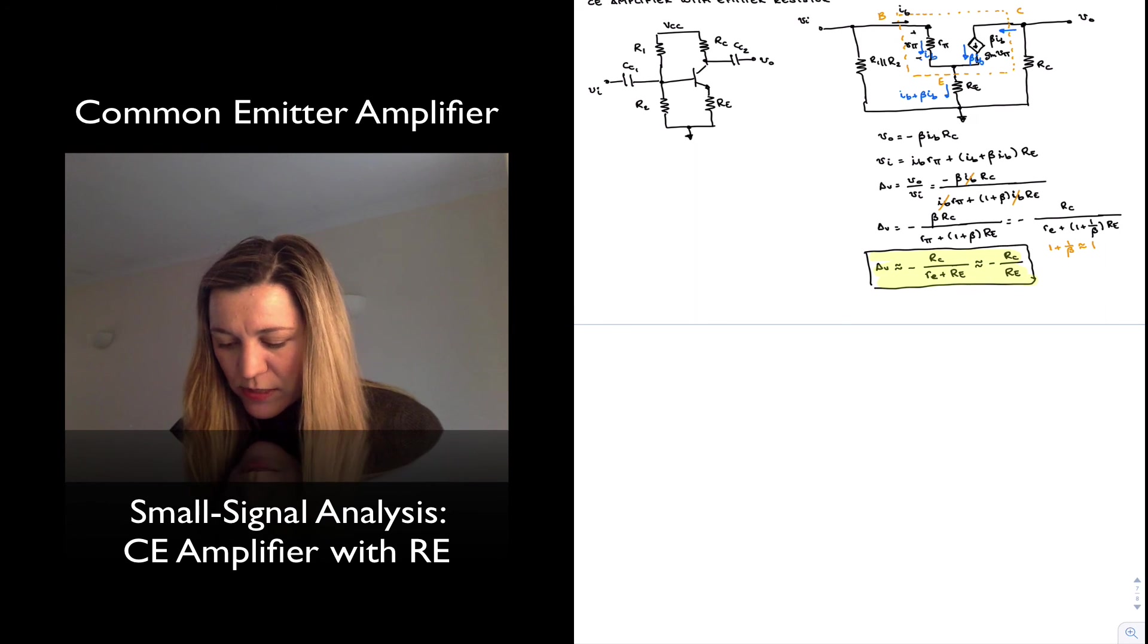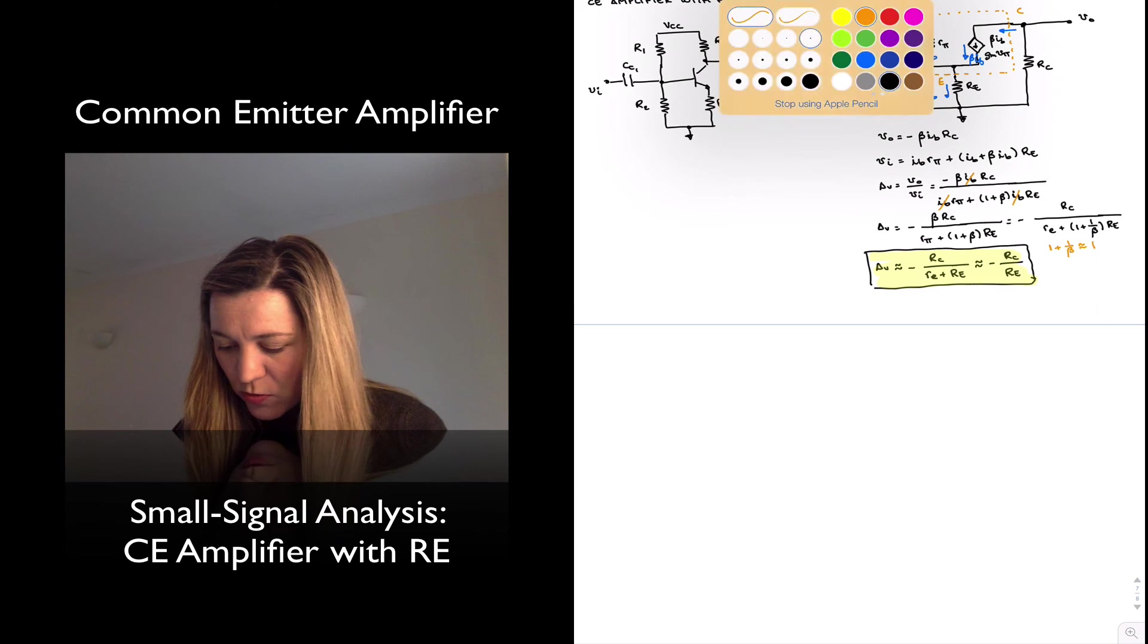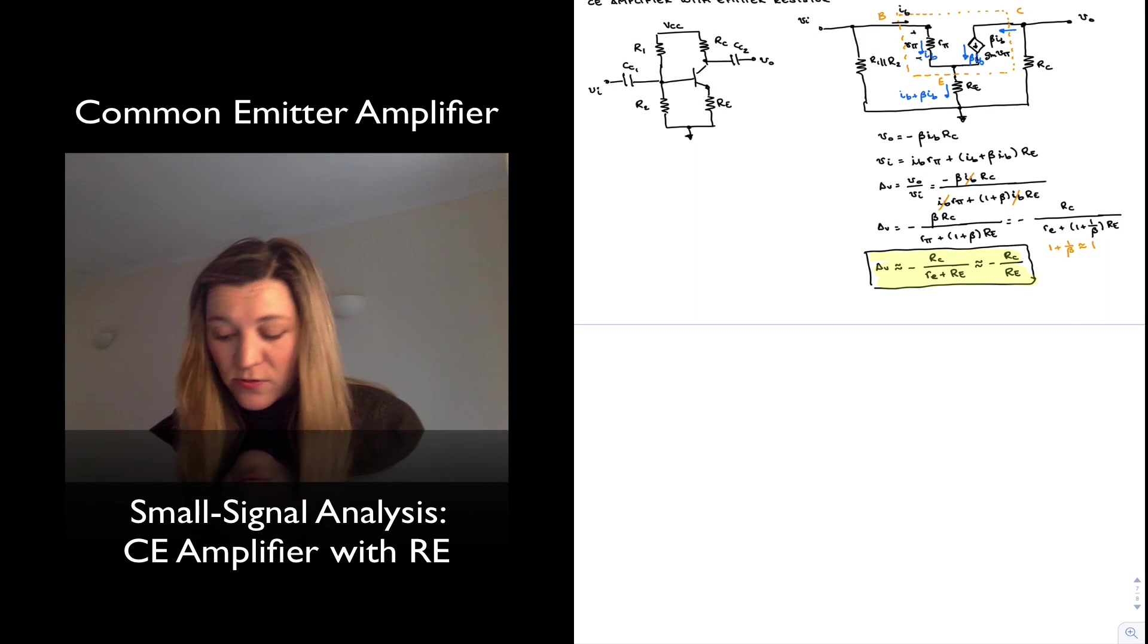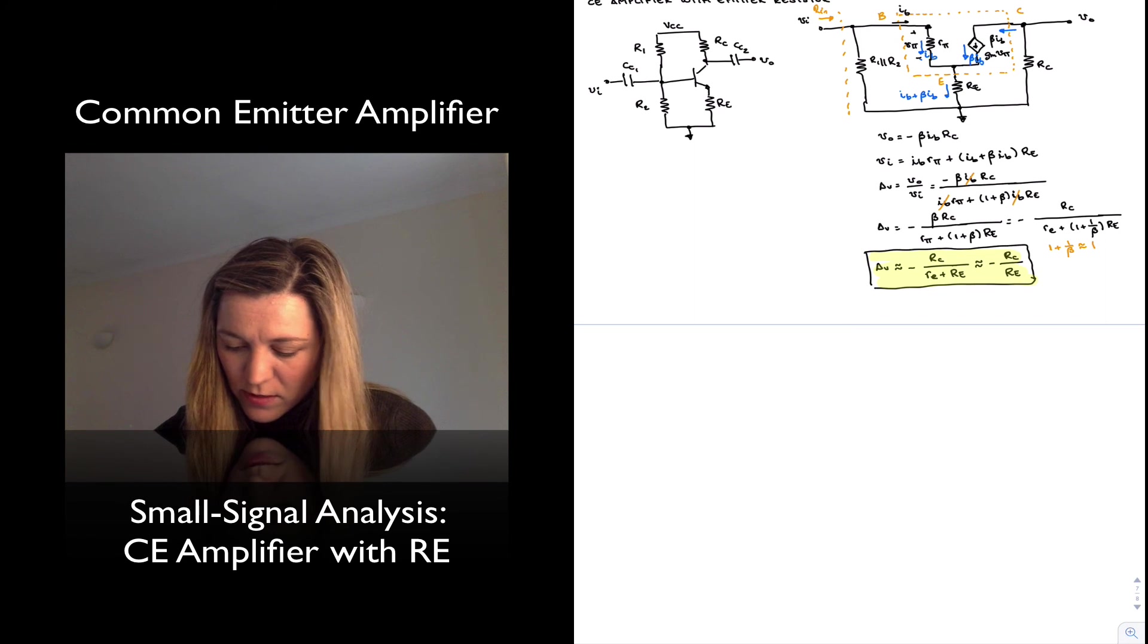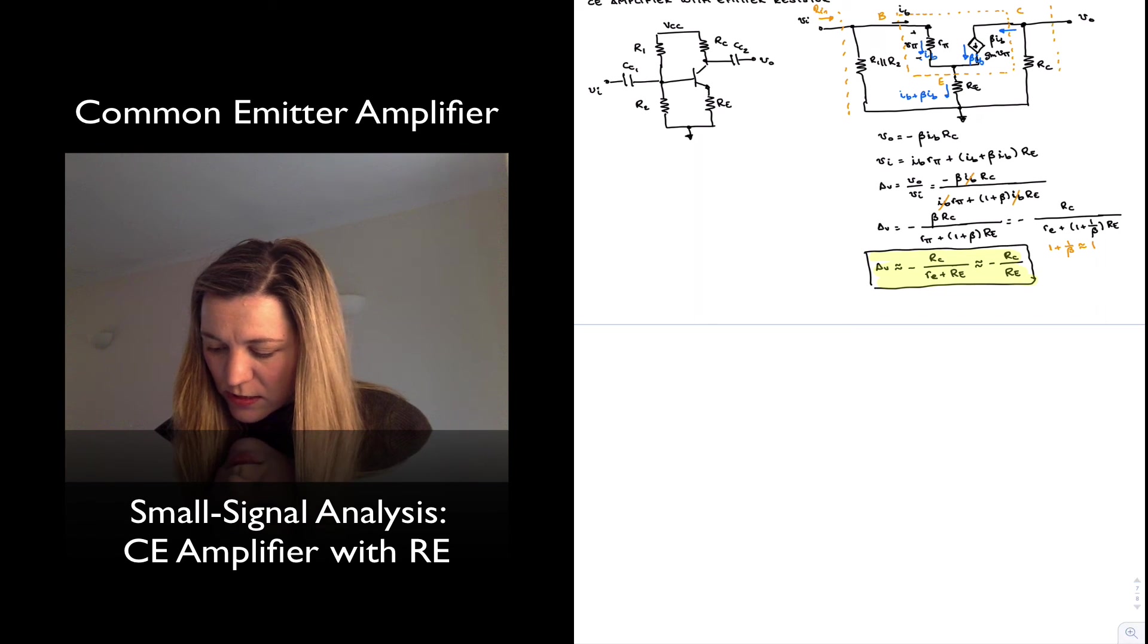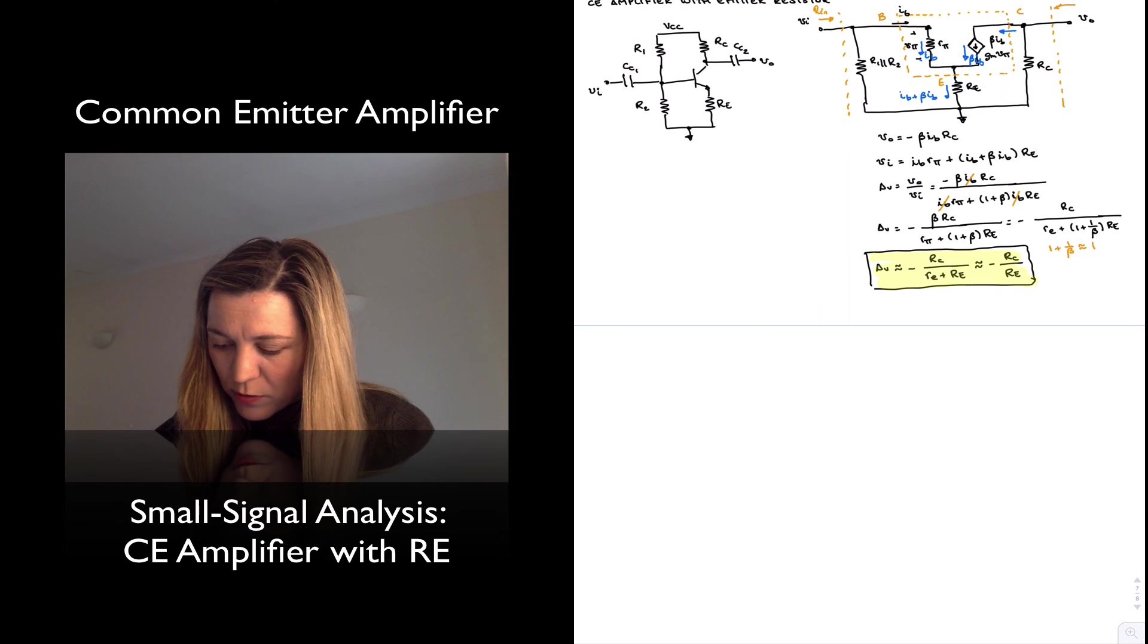Input and output resistance calculations will be similar. My input resistance for the amplifier is going to be the resistance looking from the input terminal r_in, and the output resistance is the resistance looking from the output terminal r_out.